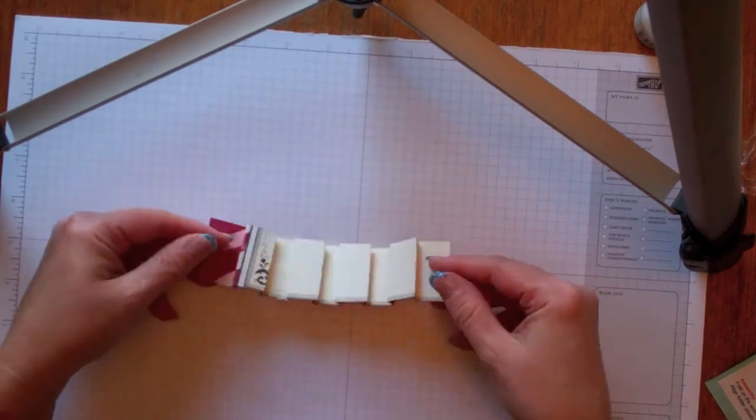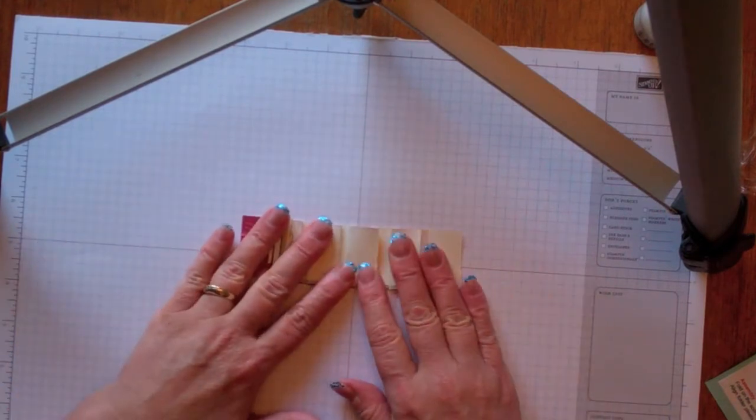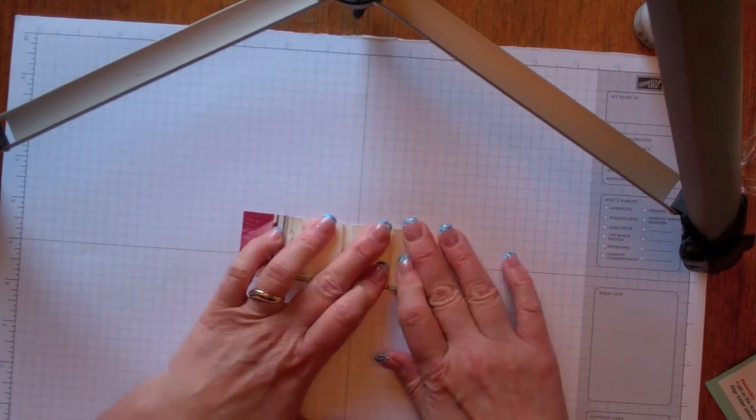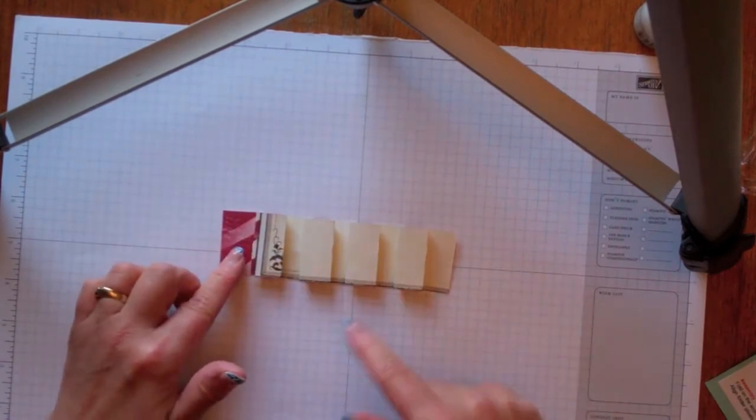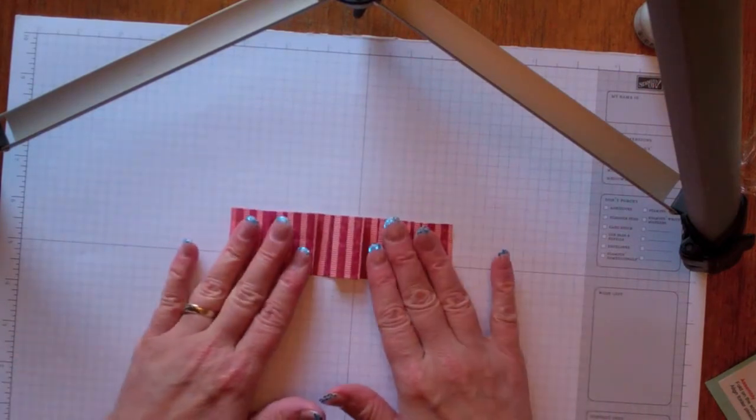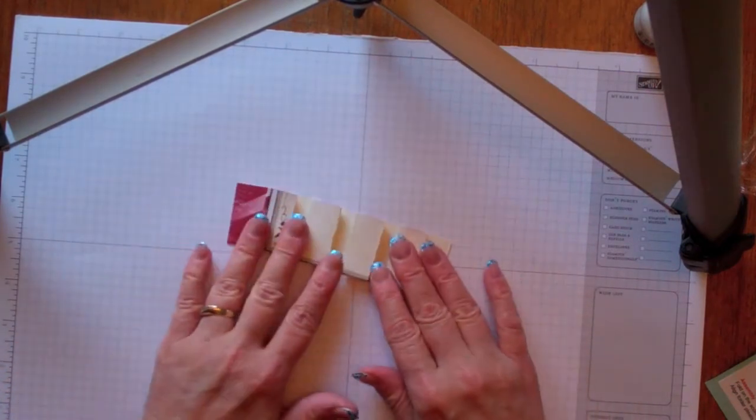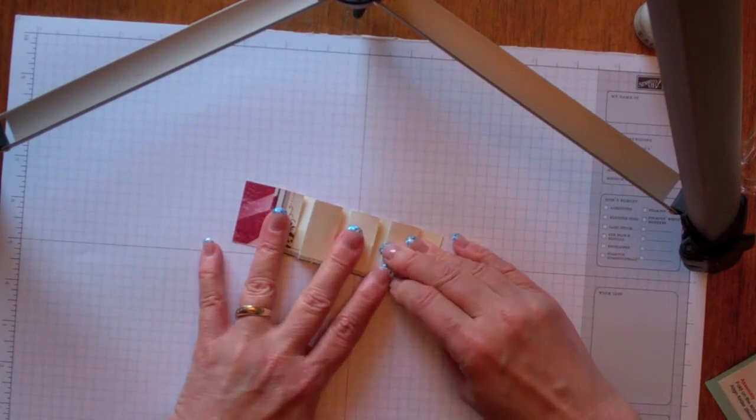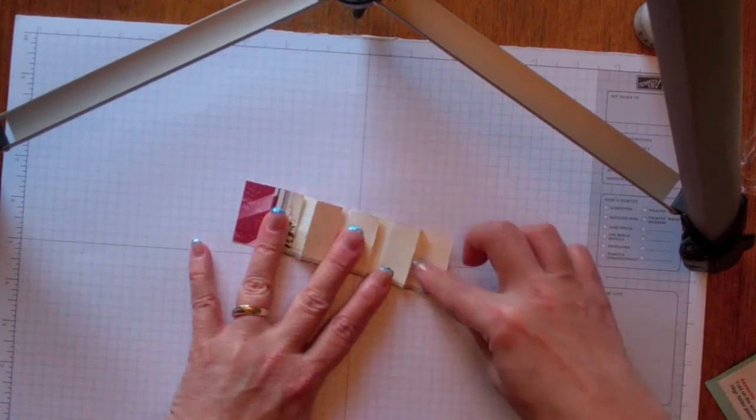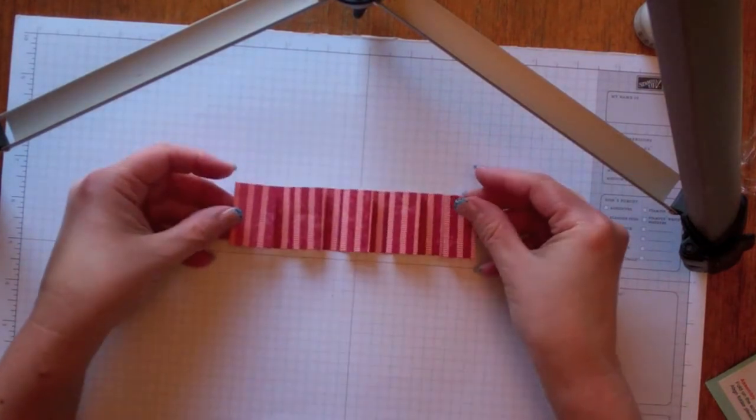So you could use either side of this once you've got it all folded because it's got the same reverse on the other side that it does on this side. Once you've got it all done, you're going to run some sticky strip along the bottom and the top here just so it will hold it in place on your card.